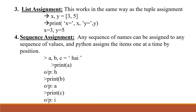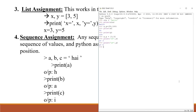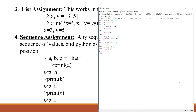Next, sequence assignment. Any sequence of names can be assigned to any sequence of values, and Python assigns the items one at a time by position. For example, if we take a, b, c = 'hai', then print a gives the output as 'h', and print b gives the output as 'a'.